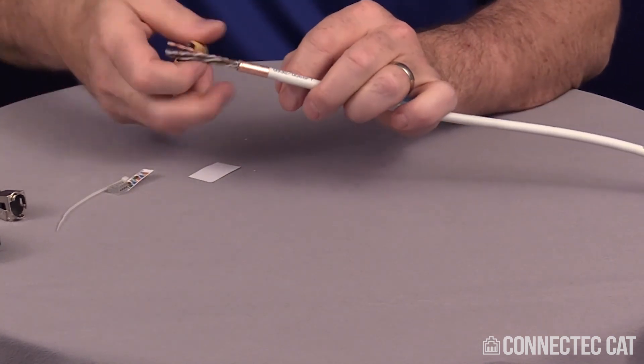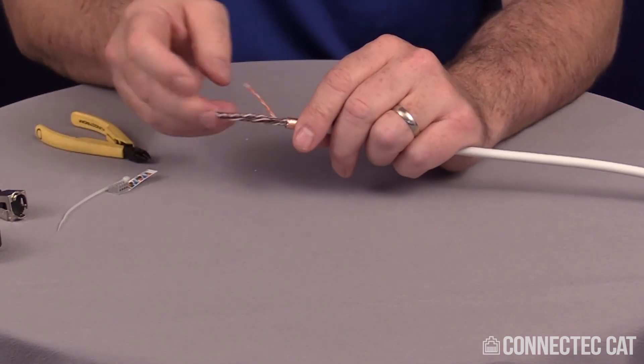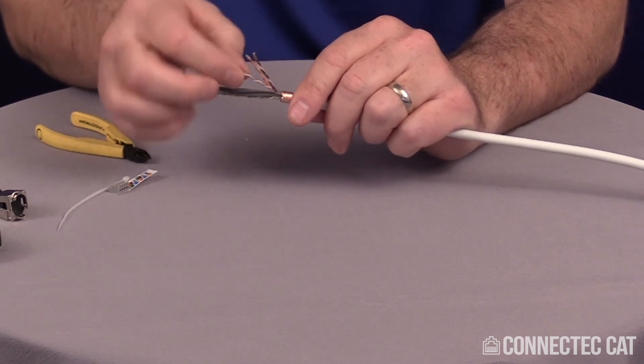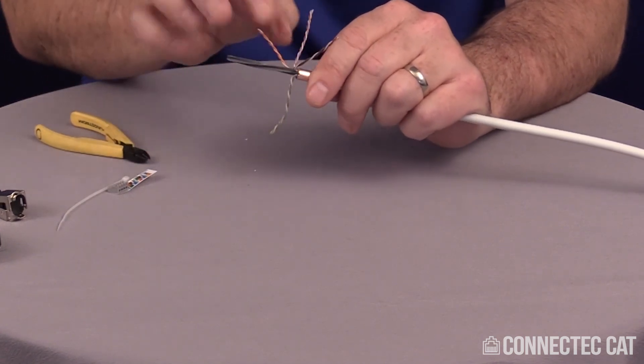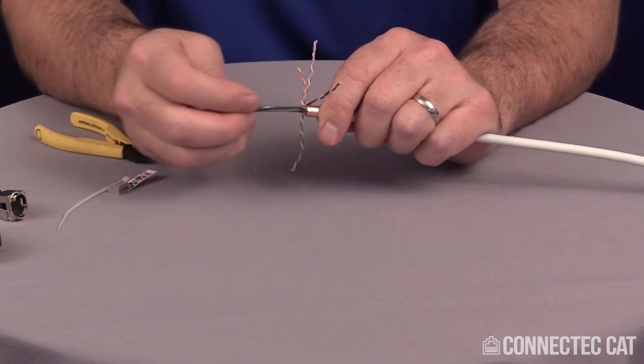Now I can cut off my excess drain wire. Now I'm going to go ahead and separate my pairs out away from the separator. Some Cat6A cables have tape separators and most of them you'll find have these crosses in them like this.